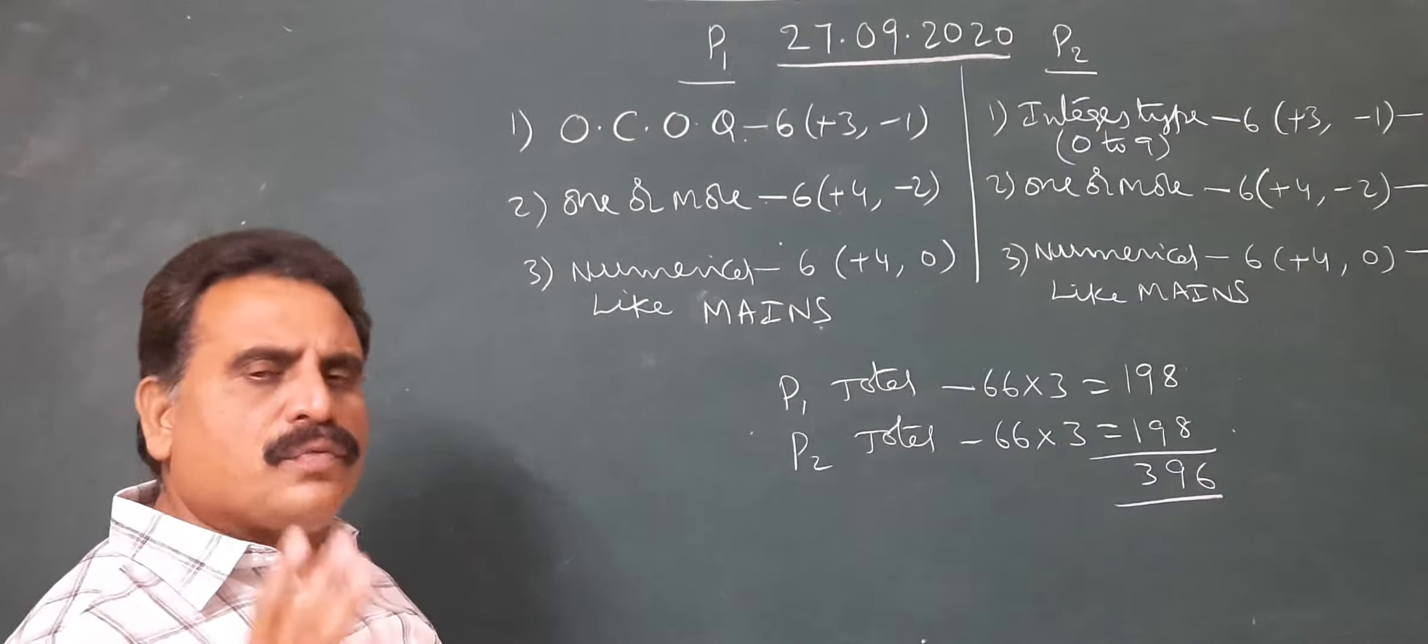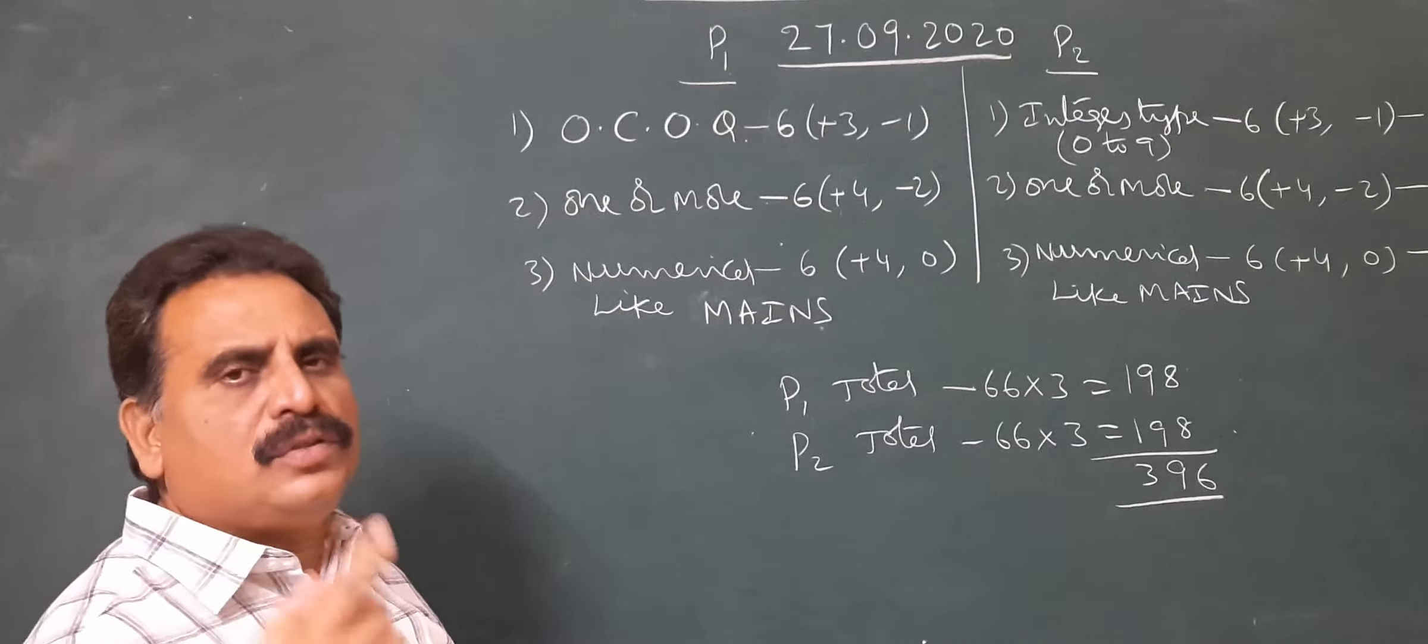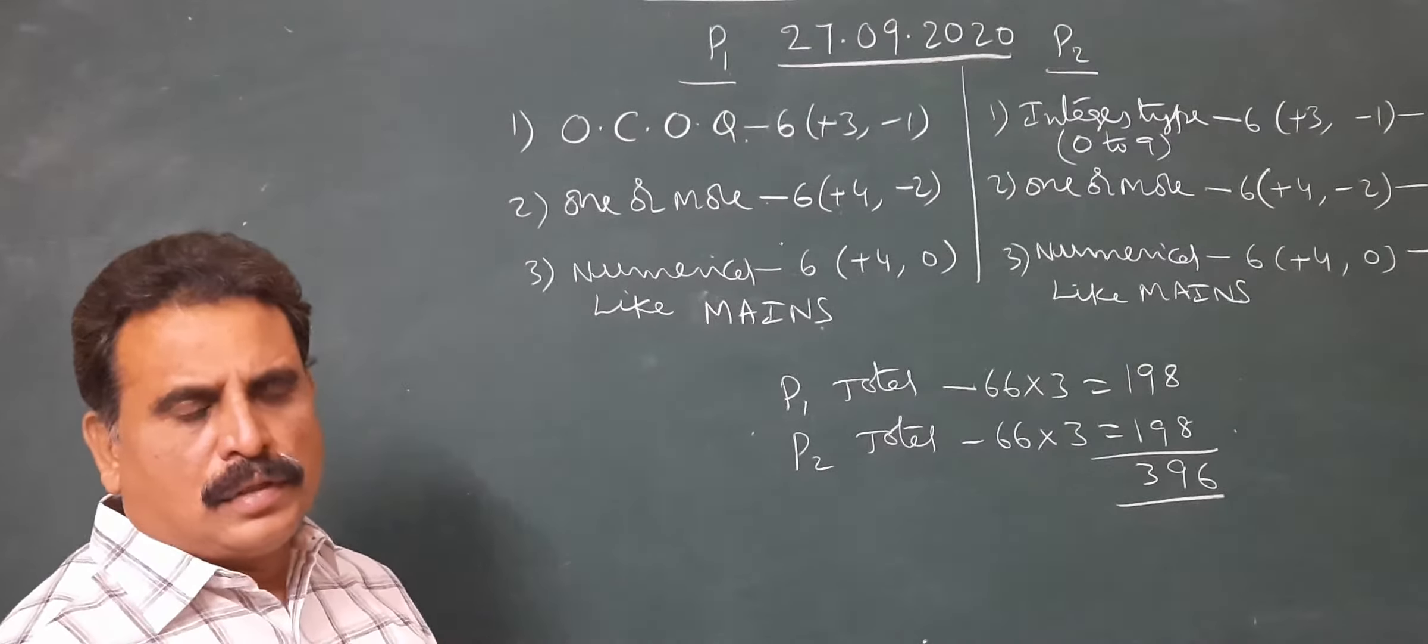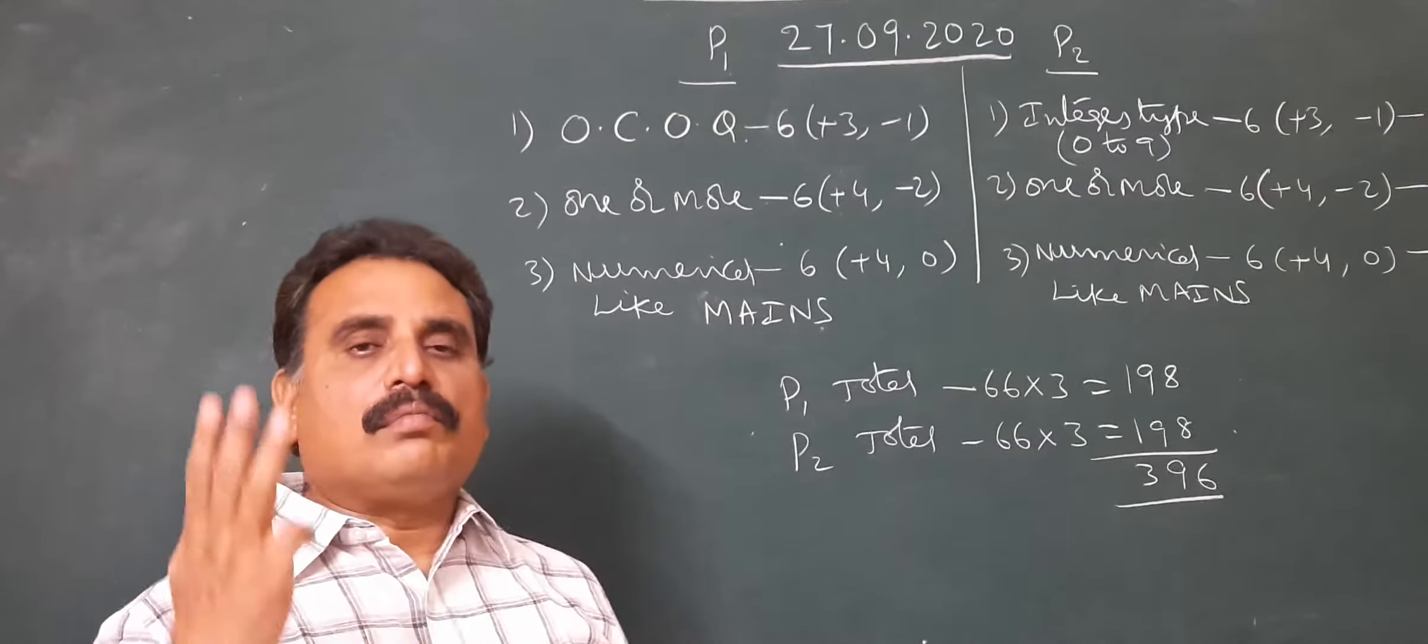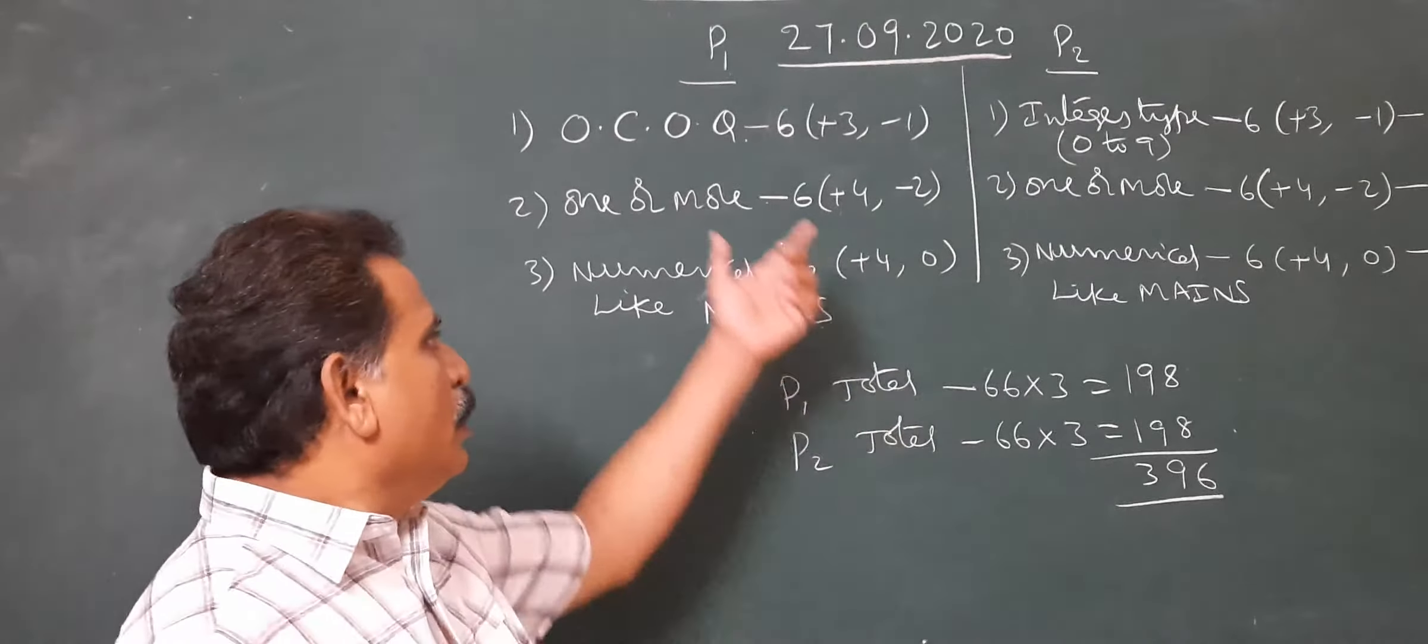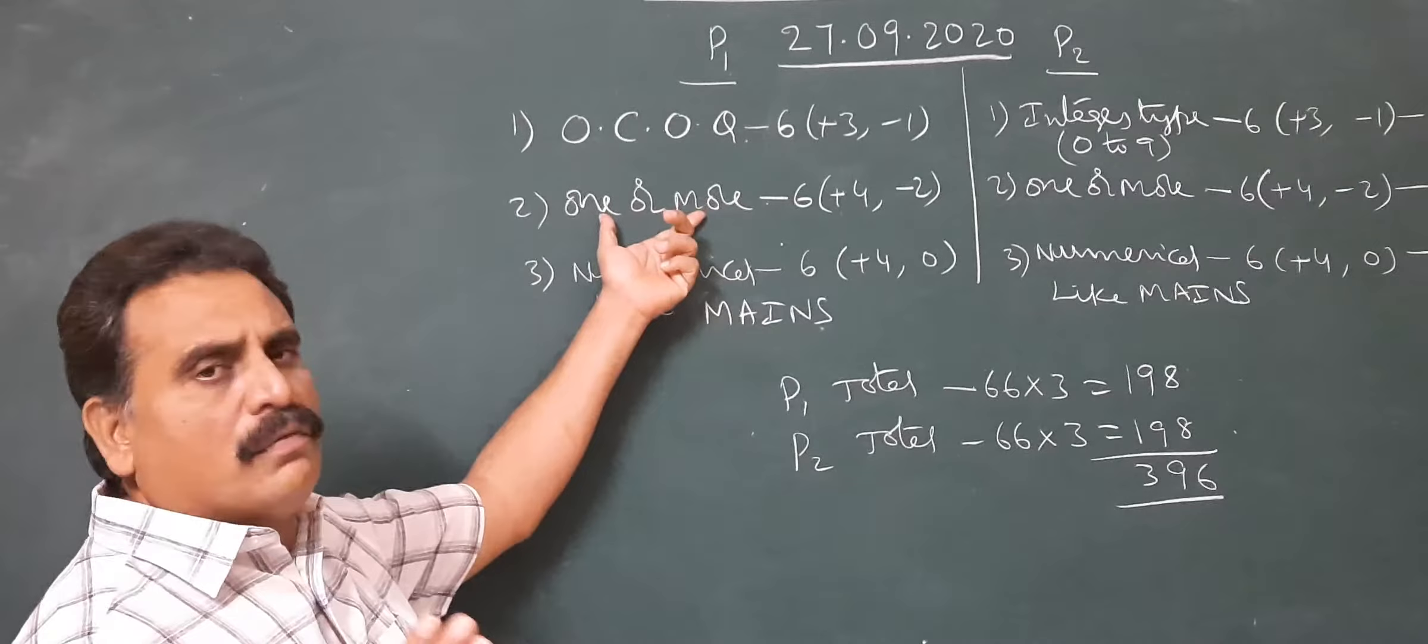If the question has four options correct and you answered three options, that means you are getting three marks. Two options, two marks. One option, one mark. Not answered, zero. Wrong answer means you are losing two marks. So in this section, partial marking is there - very difficult. So you have to answer in this section very carefully.